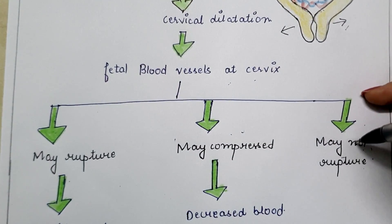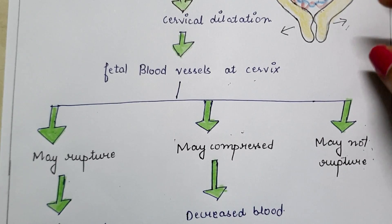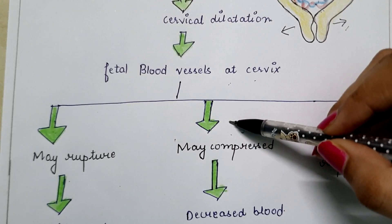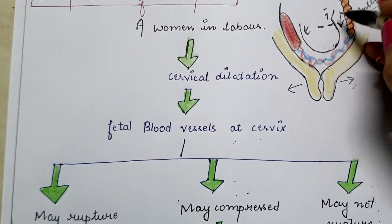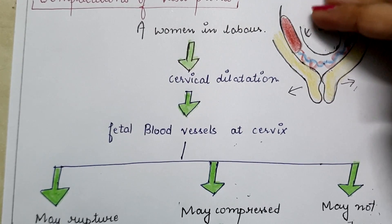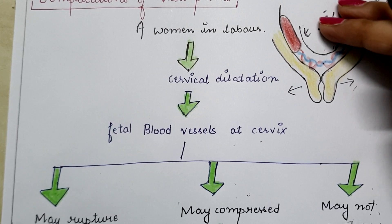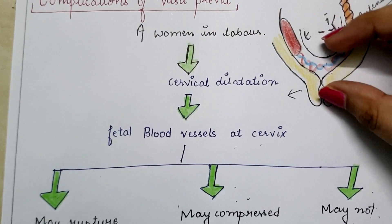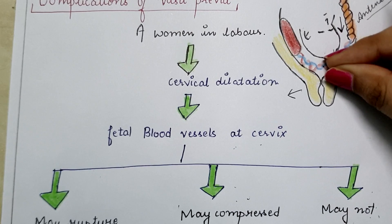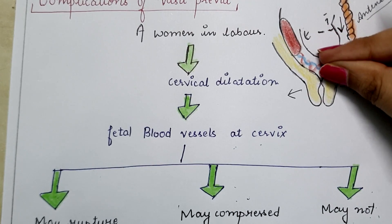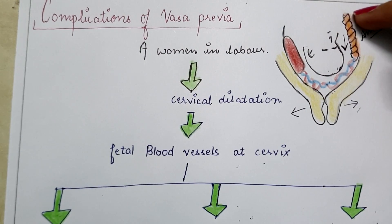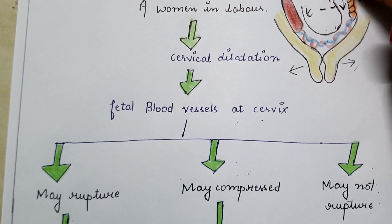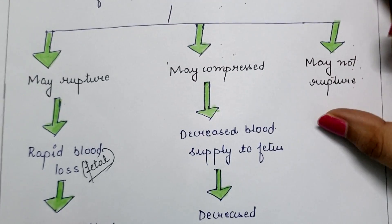First possibility: the fetal blood vessels may not rupture. Second possibility: the fetal blood vessels may be compressed. Because of uterine contractions pushing the baby's presenting part downward, the fetal blood vessels are compressed. If the fetal blood vessels are compressed, it decreases blood supply to the baby, leading to decreased fetal heart rate, intrauterine growth retardation, or possibly intrauterine death.